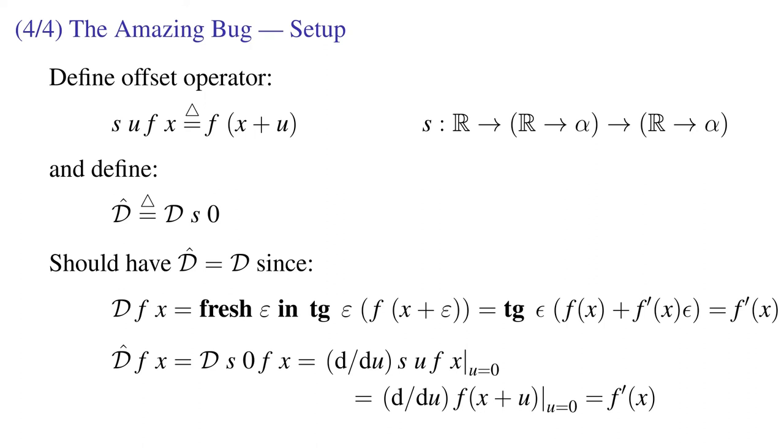Okay, now we're in a position to do something very disturbing, or quite amazing, depending on whether you like to build large correct artifacts or enjoy watching slow motion train wrecks. So I'm going to define an offset operator s. It takes an offset u and a function f and returns f offset by u.